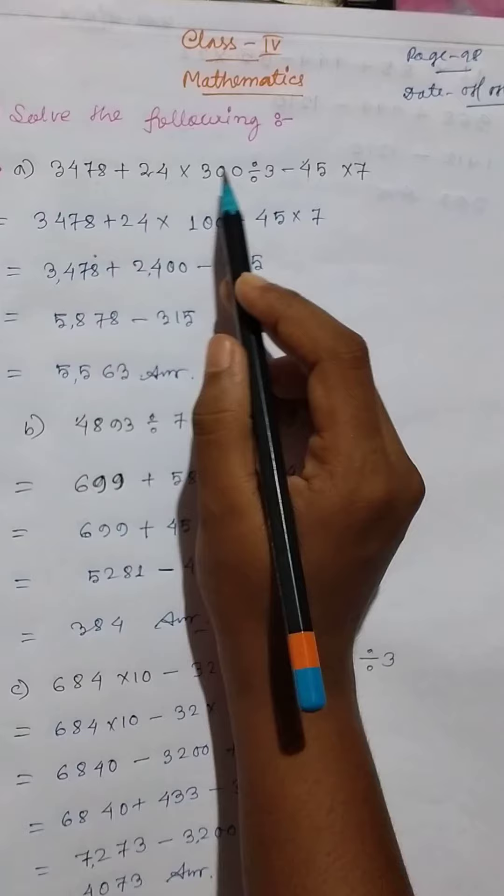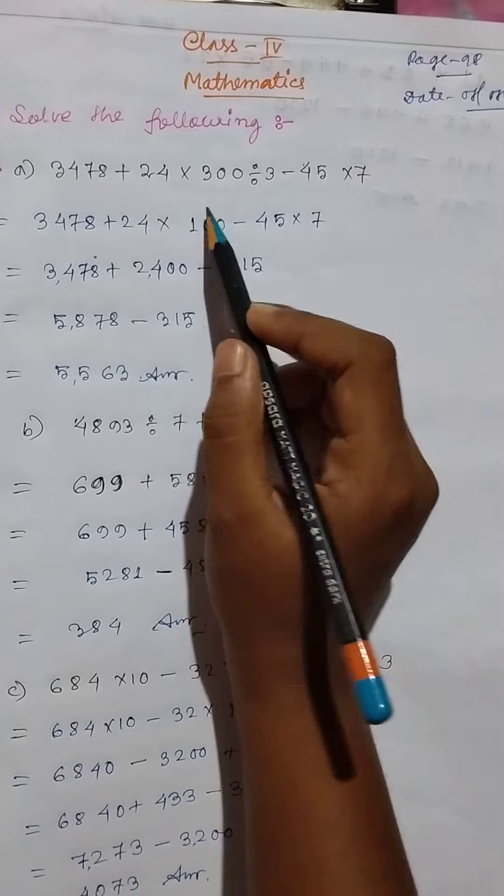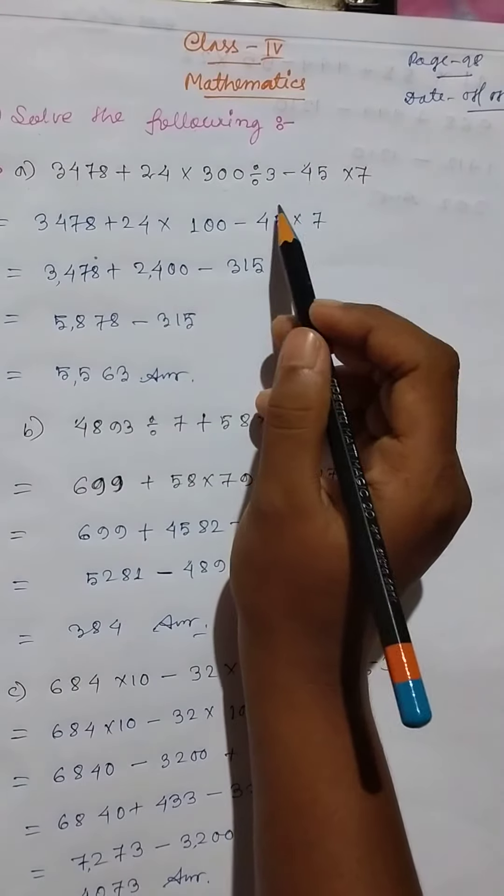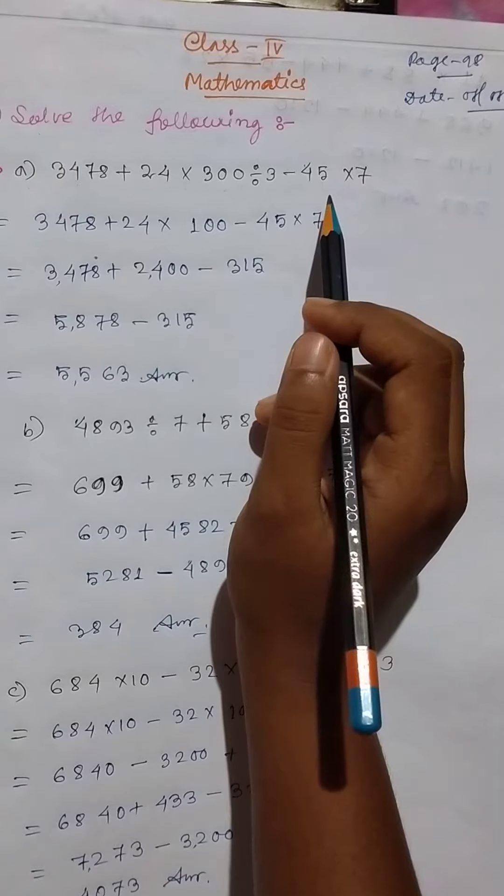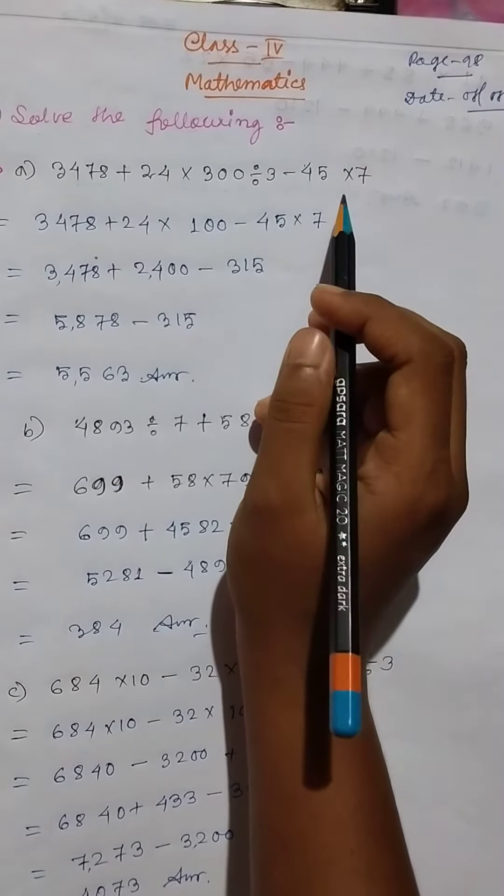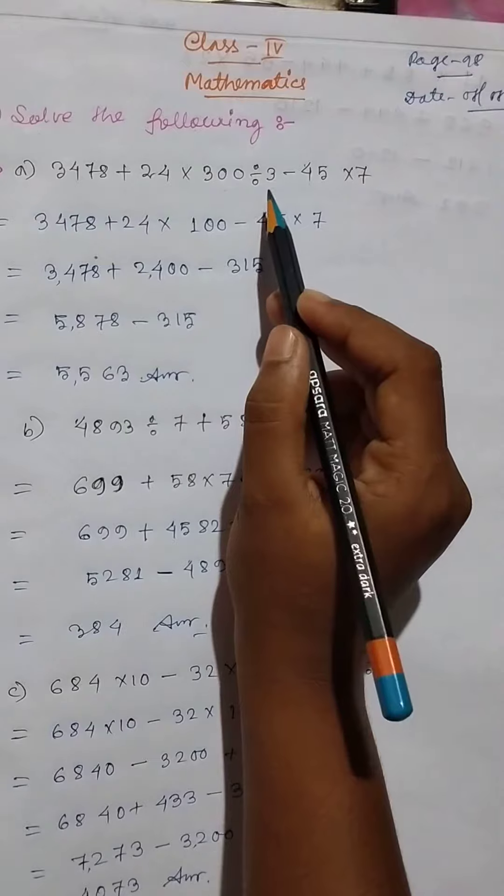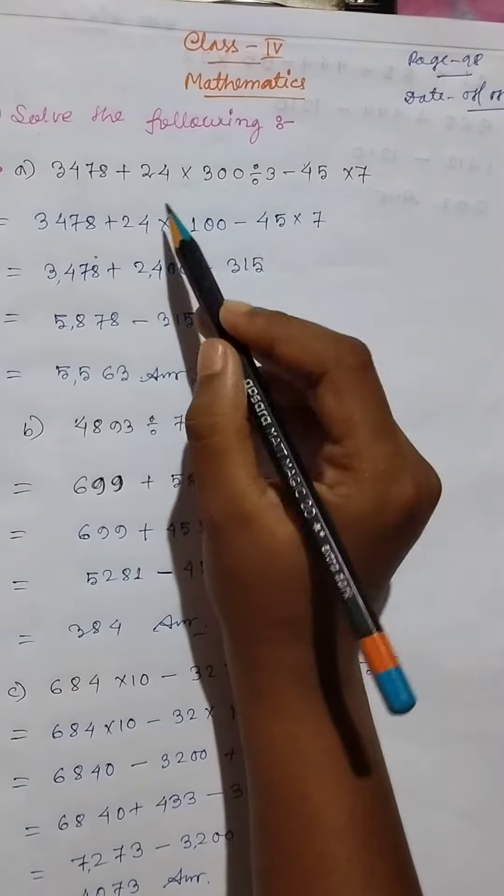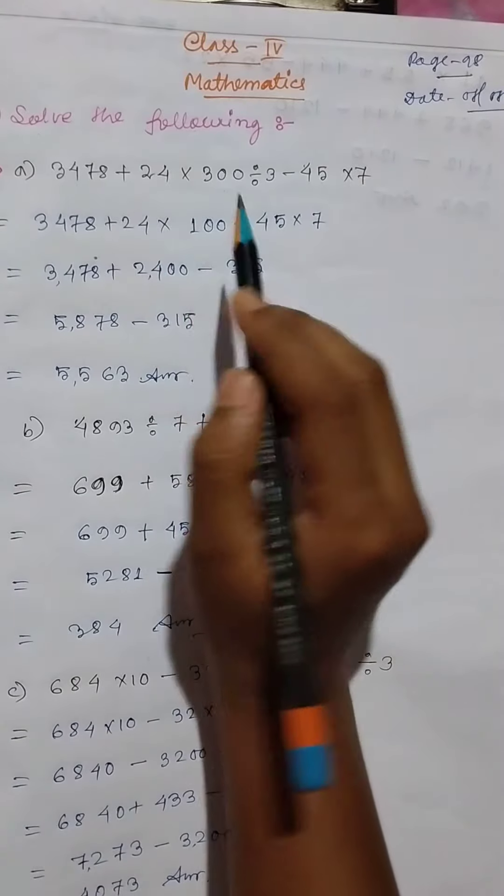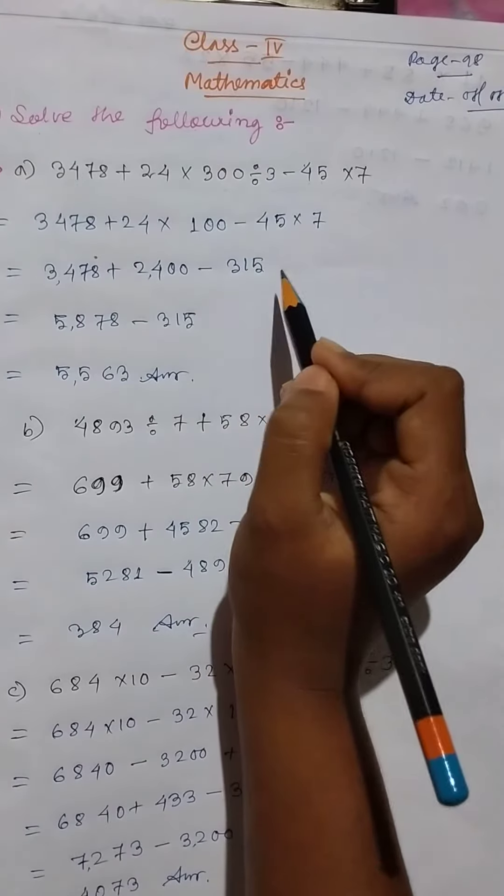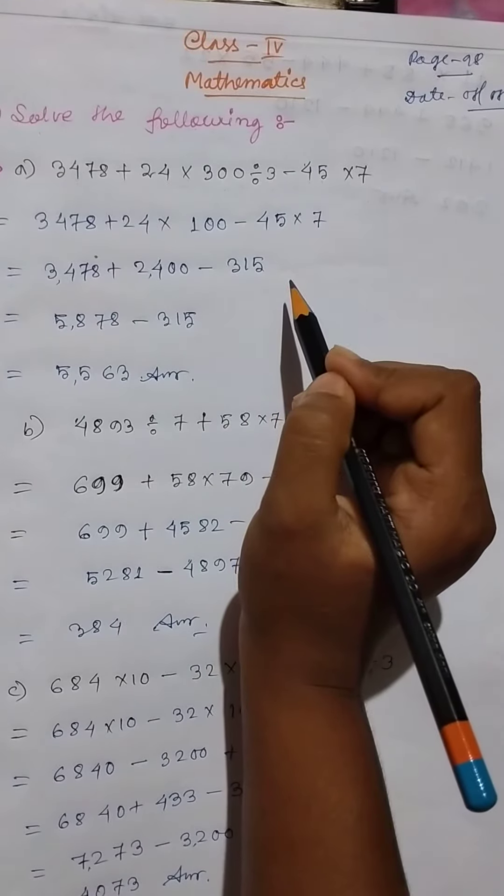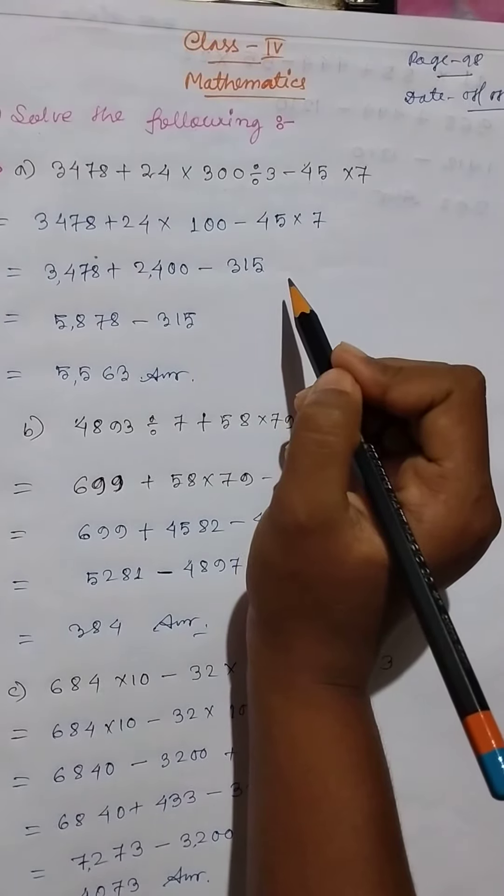So for any equation, we follow the DMAS rule. DMAS is first D for division, M for multiplication, A for addition, and S for subtraction.